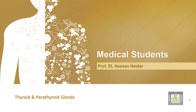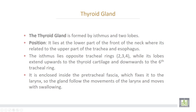The thyroid gland is formed by an isthmus and two lobes. It lies in the lower part of the neck, related to the upper part of the trachea and the esophagus. The isthmus lies opposite tracheal rings two, three, and four, while its lobes extend upward to the thyroid cartilage and down to the sixth tracheal ring. It is enclosed inside pre-tracheal fascia, which fixes the gland to the larynx, so the gland follows the movements of the larynx and moves with swallowing.